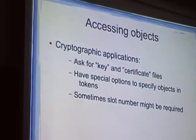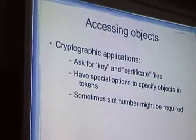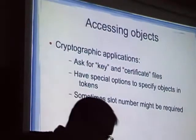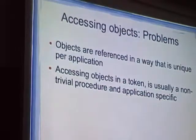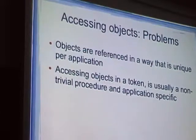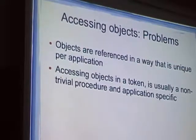Even worse, some programs require you to enter the slot number of the smart card. If you have a smart card reader that has many slots, it might require you to type the slot number — but you don't really care about that. Objects are referenced in a way that is really unique per application. We don't like that. Why should I specify different options for OpenSSL and different for GnuTLS and different for any other library?